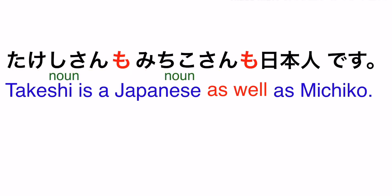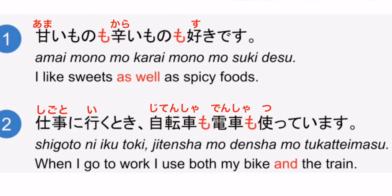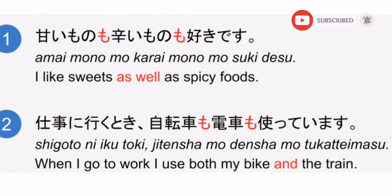Another sample. Number one: Amai mono mo, karai mono mo, suki desu. I like sweets as well as spicy foods. Number two: Shigoto ni iku toki, jitensha mo, densha mo, tsukaimasu. When I go to work, I use both my bike and the train. So dito din is parihong dalawang mo at dalawang noun yung ginamit natin sa isang sentence.